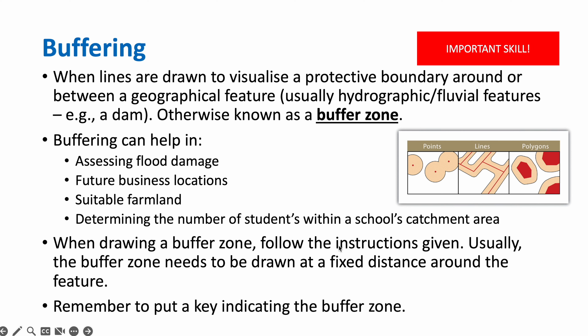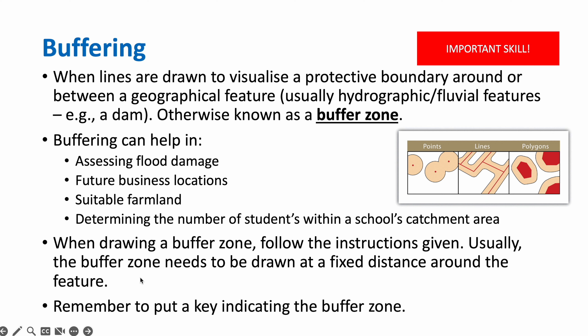When drawing a buffer zone, you must follow the instructions given. Usually the buffer zone needs to be drawn at a fixed distance around the feature. For example, they may ask you to draw a buffer zone around a dam and explain why buffering is important — you could answer by saying you can assess flood damage and see how many houses are affected if the dam expands. It is also important to include a key indicating the buffer zone, for example if they tell you to draw a buffer zone of one centimeter around the dam.